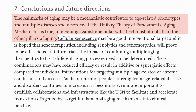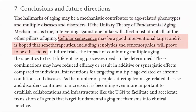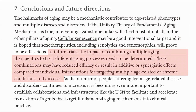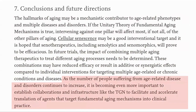In conclusion, they say that the hallmarks of ageing may be the mechanisms that drive ageing, and if the unitary theory of fundamental ageing is correct, then intervening in one pillar will affect most, if not all of them. Senescent cells are a good target through senolytics and senomorphics. They call for combining ageing therapeutics to see if they are synergistic. It is important to establish collaboration and infrastructures like TGN to accelerate the research into agents that target the fundamental ageing mechanisms so that they can be moved into clinical practice.